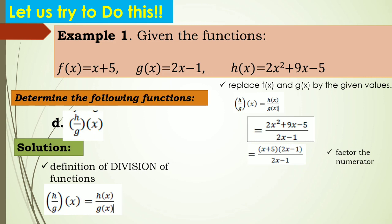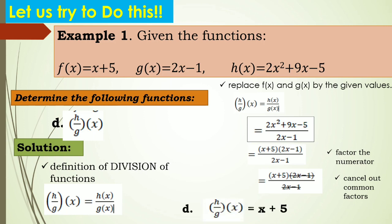Divide by 2x minus 1. Using cancellation, cancel out the common factor 2x minus 1 from the numerator and denominator. What remains is x plus 5. Therefore, f divided by g of x equals x plus 5. That is your final answer for letter D.